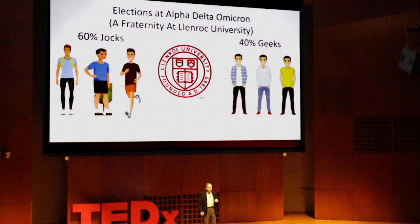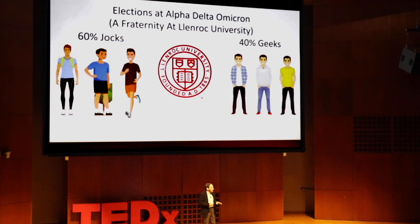The student assembly elections at Lenrock University allow the fraternity Alpha Delta Omicron to have three representatives. The fraternity is a diverse group, but for simplicity, let's assume that they fall into roughly two groups.